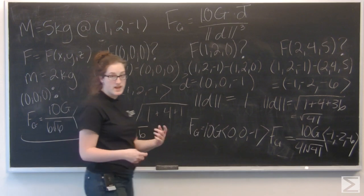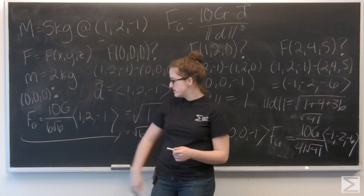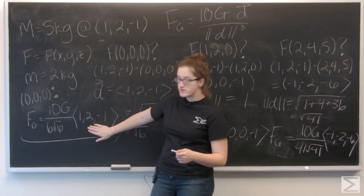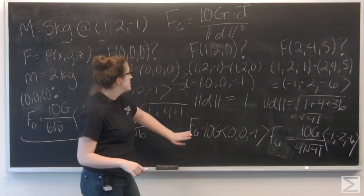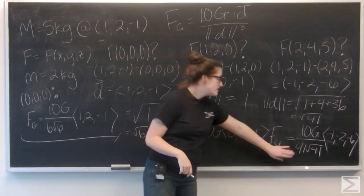So now that's it, I have my three gravitational forces at (0, 0, 0), at (1, 2, 0), and at (2, 4, 5).